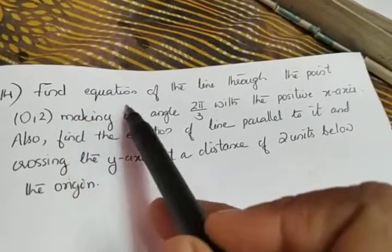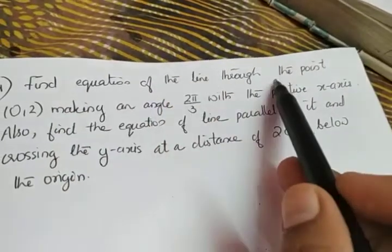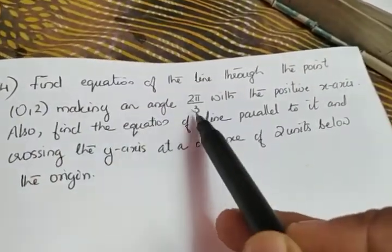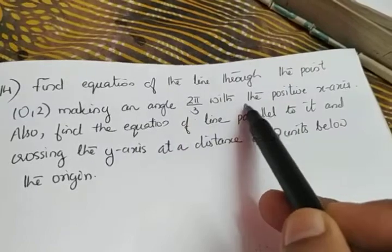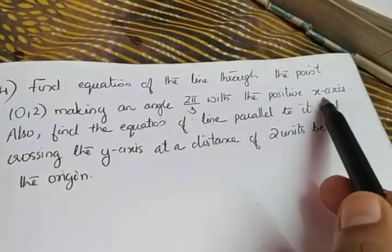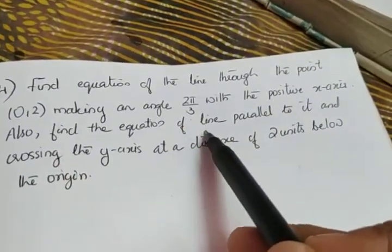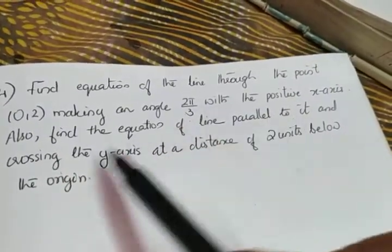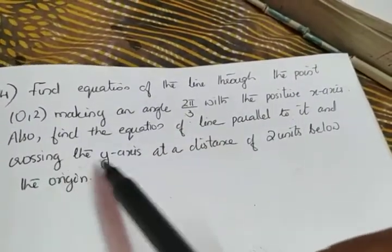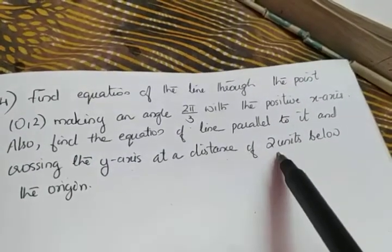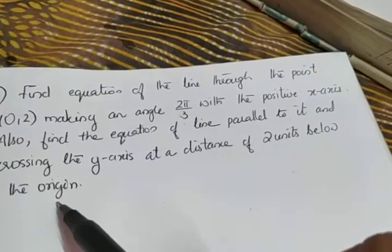Find the equation of the line through the point (0, 2) making an angle 2π/3 with the positive x-axis. Also find the equation of a line parallel to it and crossing the y-axis at a distance of 2 units below the origin.